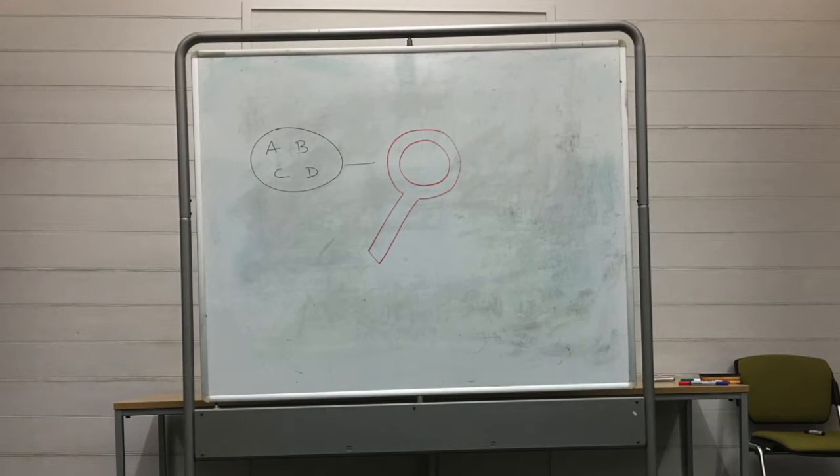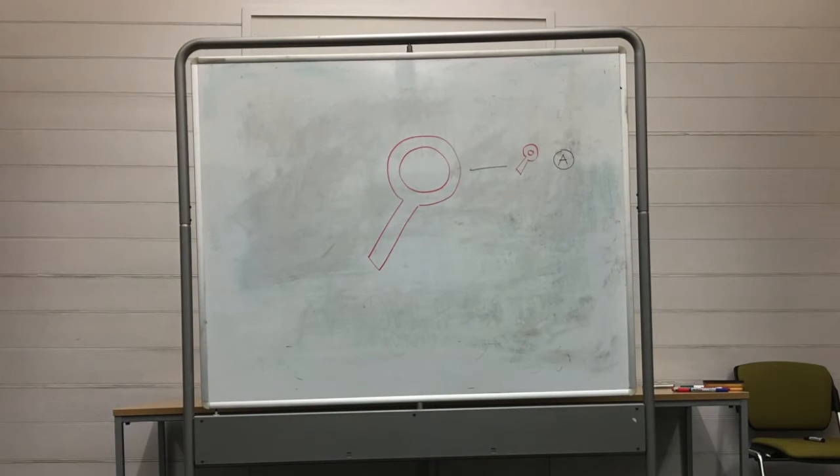Before an object's state is measured, its different possible states coexist, whereas after the measurement you observe only one state.